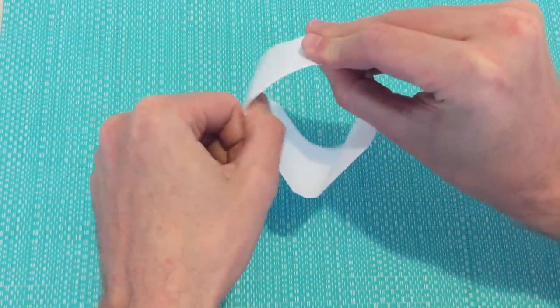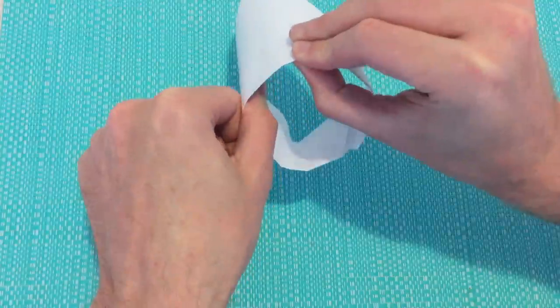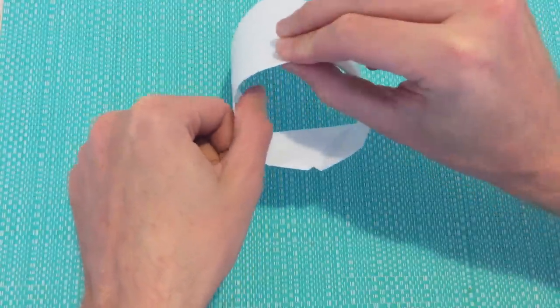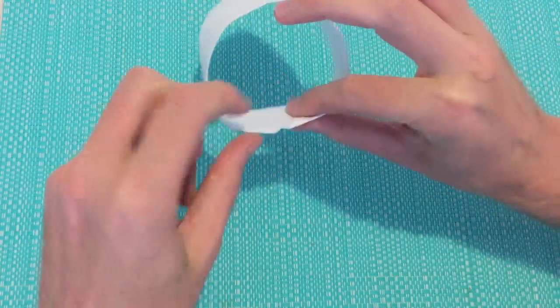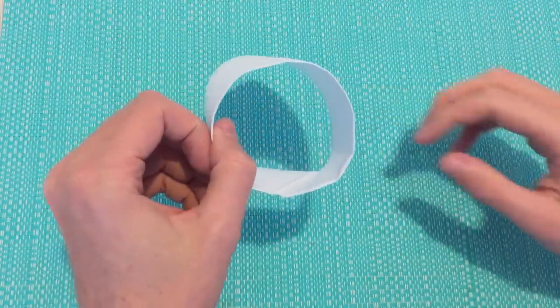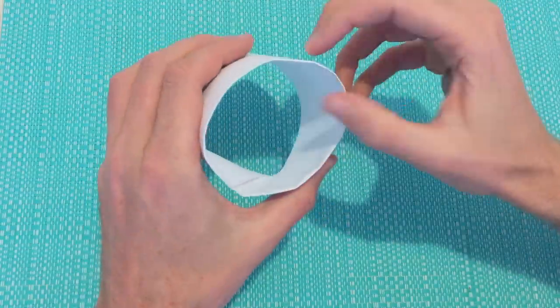Then we can work our way around, creating a circle. It's a very easy design. Now that we've worked our way around the edges, we should have more or less a circle.